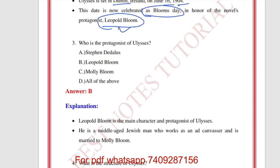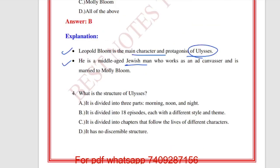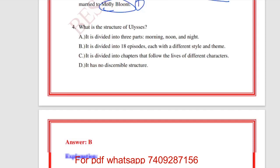These are the important words you should note down. Leopold Bloom works as an ad canvasser and is married to Molly Bloom. The next important character is Molly Bloom.